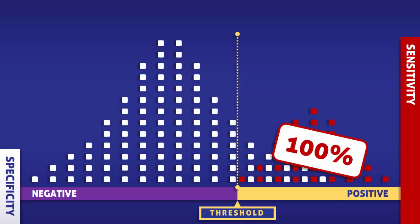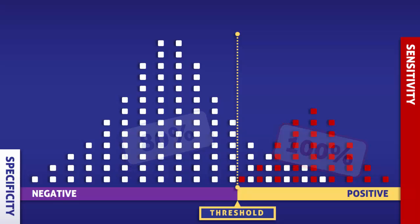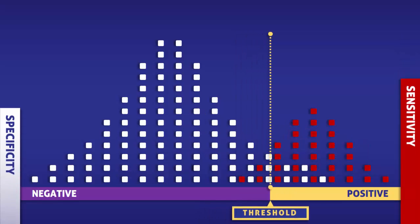The specificity, however, has dropped to 80%. So although the test is detecting the condition in everyone who has it, it is also incorrectly identifying the condition in people who do not have it.